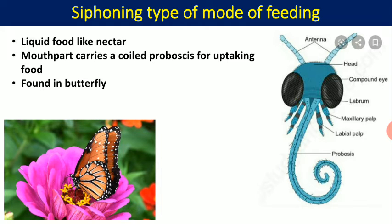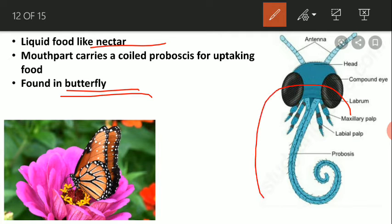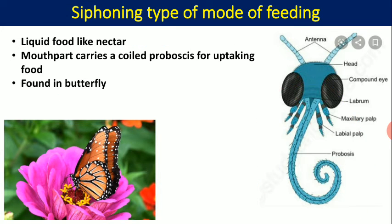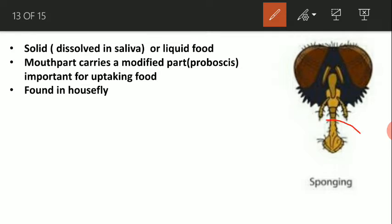The next type is siphoning. In this case, the food material is liquid — specifically nectar present in flowers. It is found in butterflies. The butterfly has a special structure that forms a coiled shape, known as a proboscis. By inserting this proboscis into the flower, the butterfly sucks the nectar.